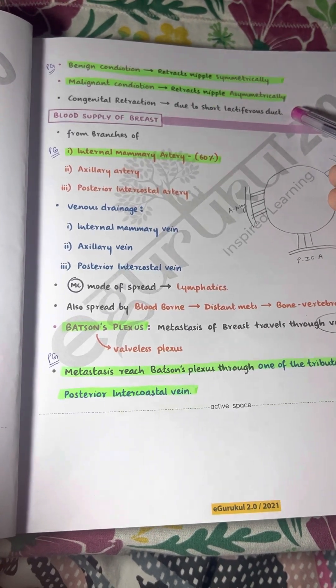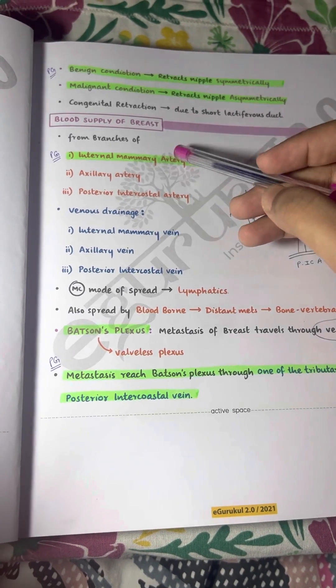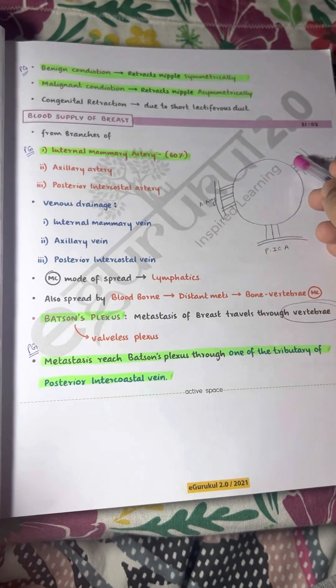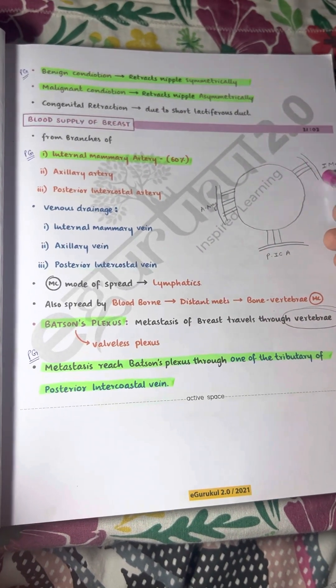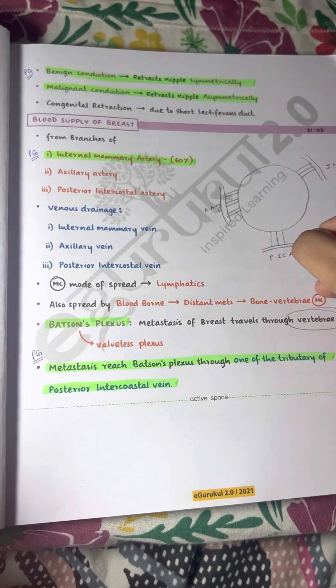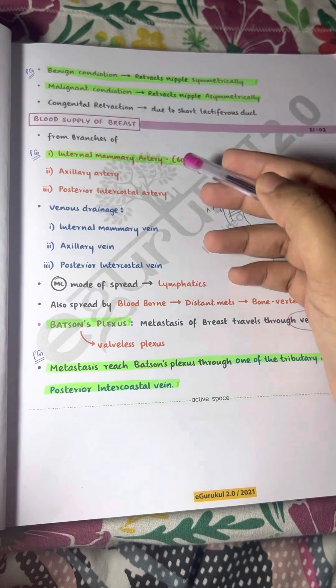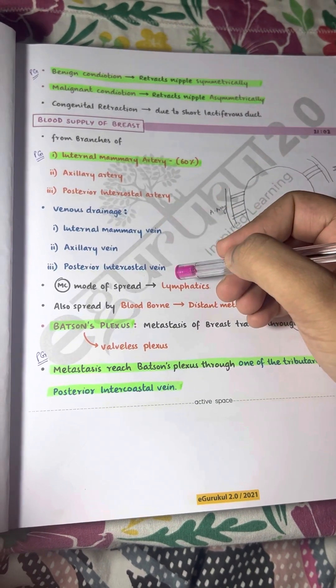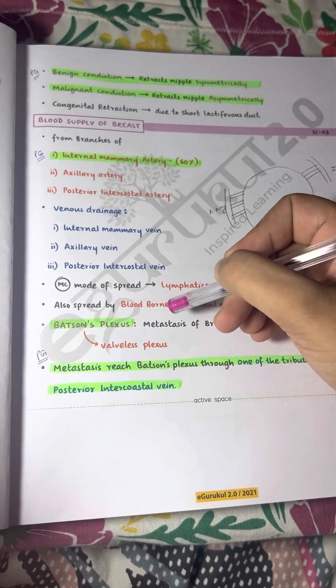The blood supply of the breast comes from branches of the internal mammary artery, the axillary artery, and the posterior intercostal arteries. The venous drainage follows a similar pattern.